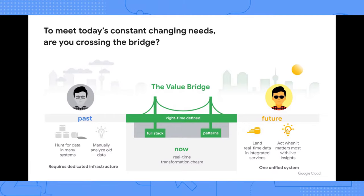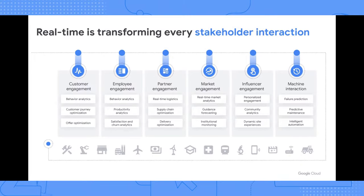We call this the real-time transformation chasm. The question is: do you and your organization have the right tools, infrastructure, and skills to cross that value bridge? This shift is happening everywhere regardless of what your organization decides. Real-time is transforming every industry stakeholder interaction — customer engagement, employee engagement, real-time behavior analytics, influential social media, machine interactions, failure predictions, and predictive maintenance.